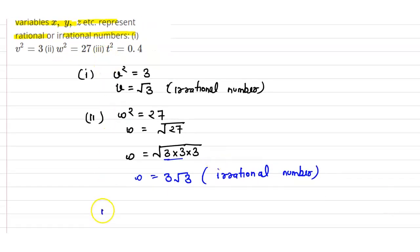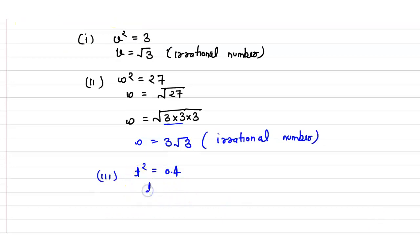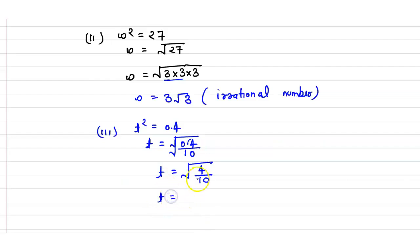The third part gives t² = 0.4. Taking the square root, t = √0.4. Removing the decimal, this becomes √(4/10). Simplifying, 4 = 2² and 10 = 2 × 5, so t = √(2/5). Since this is not a perfect square, t is also an irrational number.